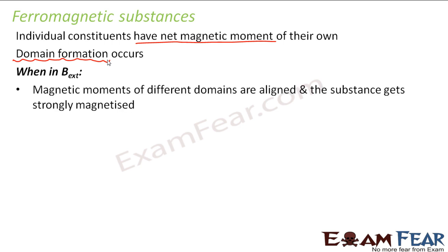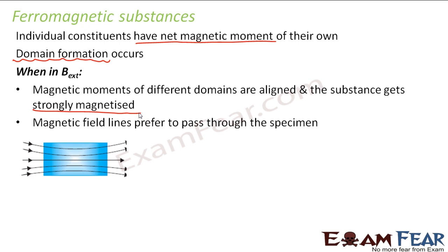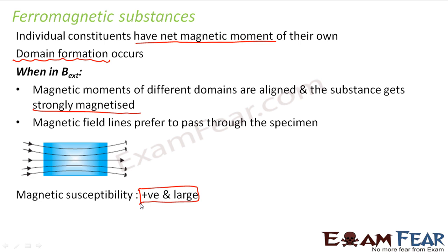When an external magnetic field is applied to a ferromagnetic substance, the magnetic moments of different domains align and the substance gets strongly magnetized. In paramagnetic substances, magnetic moments tend to align along the field direction, but in ferromagnetic substances they align much more strongly. The magnetic field lines prefer to pass through the specimen, and magnetic susceptibility is positive and very large because the substance is getting very strongly magnetized.